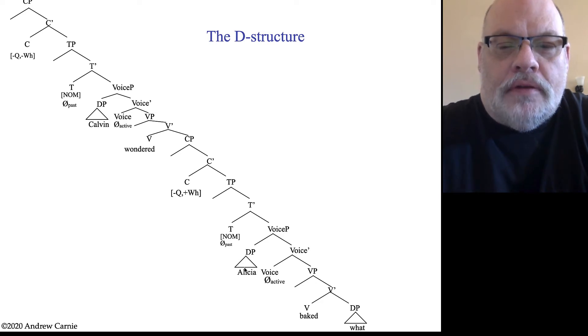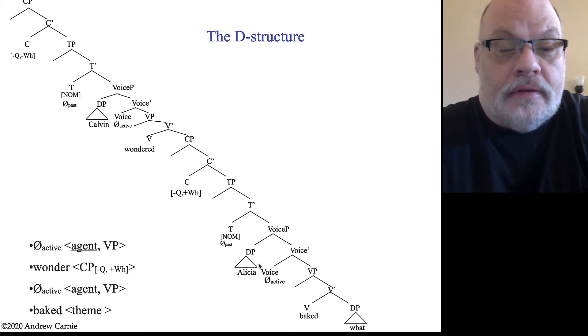The first thing we want to do is make sure that our arguments are correctly placed in their theta positions. That's the positions where they get their theta roles. So we actually have two sets of verbs here. One is this higher verb wonder, and the other is the lower verb bake. And we have to check all of our constraints for both of those things. So in the higher verb wonder, the verb wonder takes a CP as its complement, and it takes a CP that is not a question.